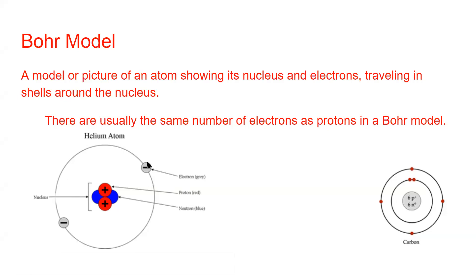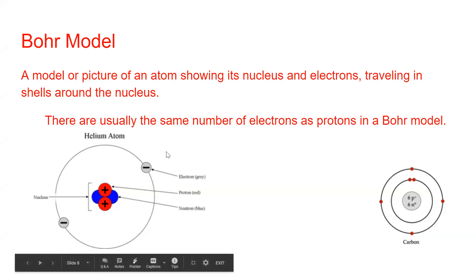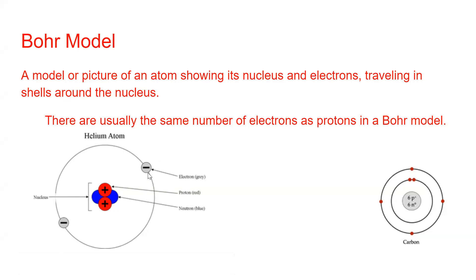In a Bohr model, we draw the same number of electrons as we have protons — the positives equal the negatives, meaning the positive charge particles equal the negative charge particles. For neutrons, that will depend and we'll learn more about that as we move on. But the pluses and the minuses are equal in a Bohr model most of the time.